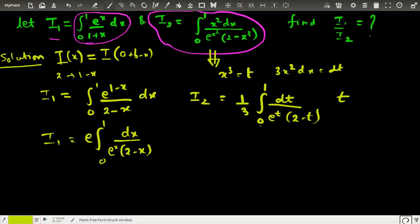Clearly, a change of variables is permitted because the value does not depend upon the variable, it depends upon the limits. The limit of this integration is 0 to 1, so it doesn't matter whether I write t or x. So I₂ = (1/3)∫dx/(e^x(2-x)).